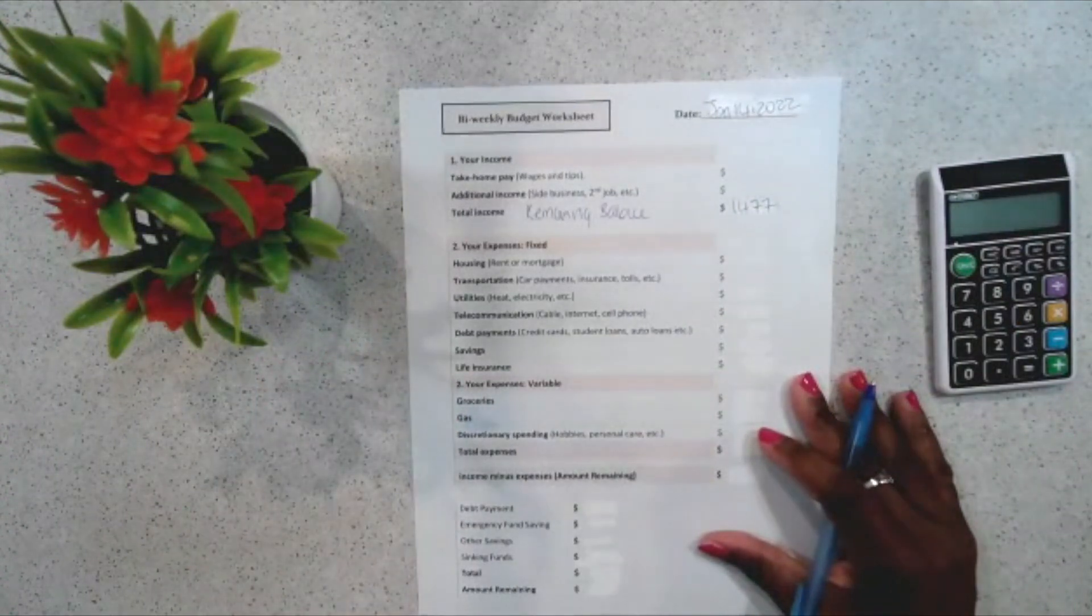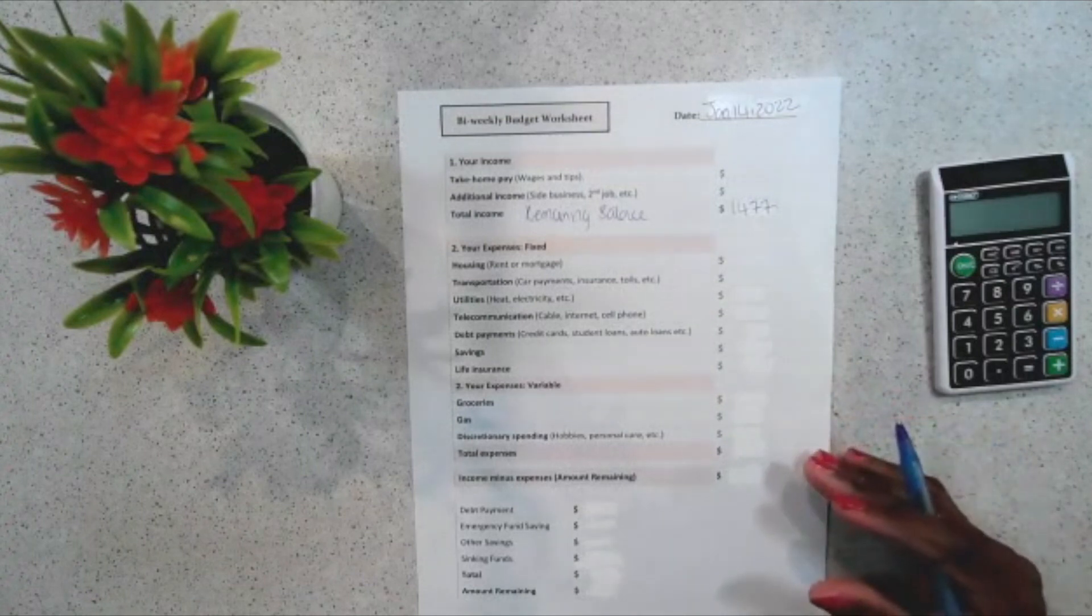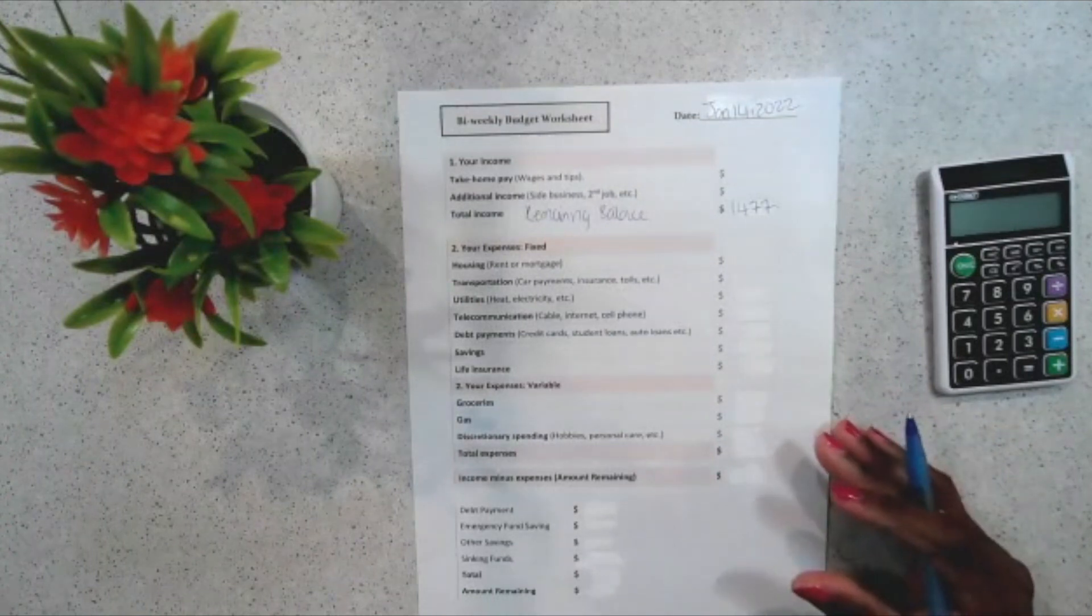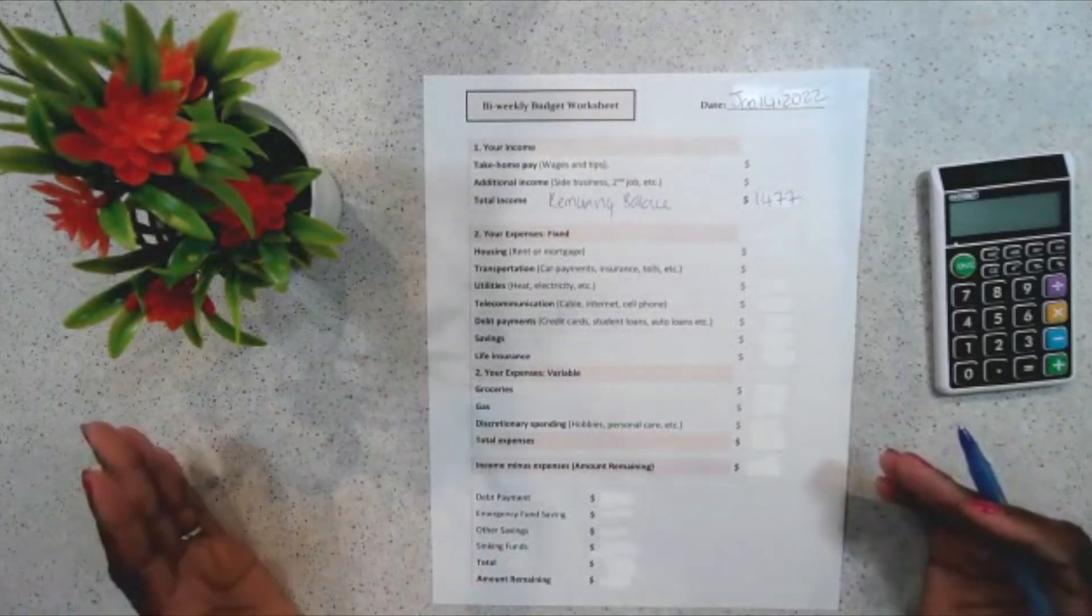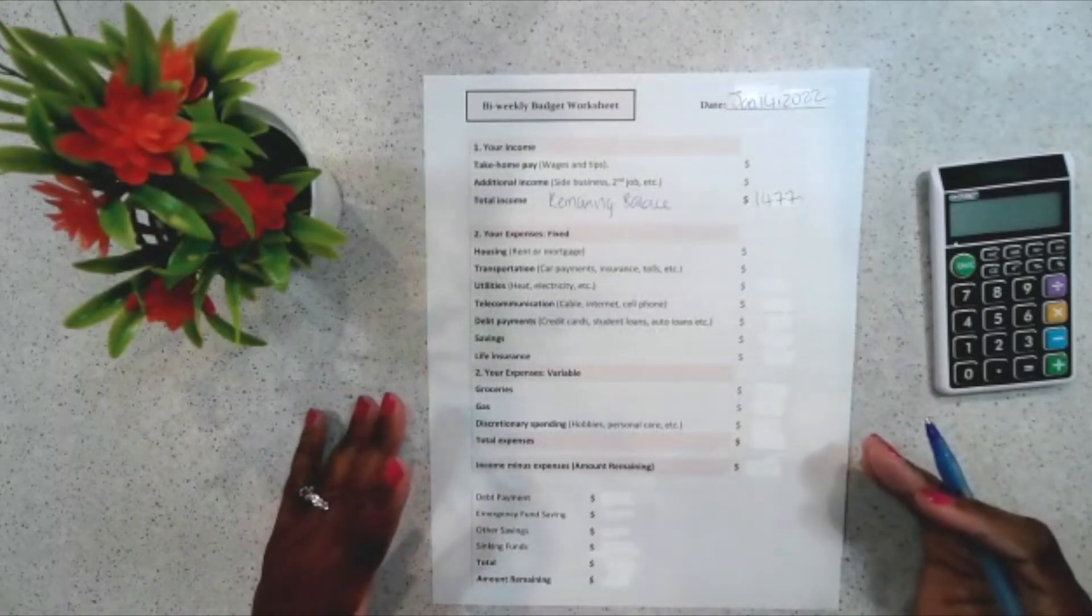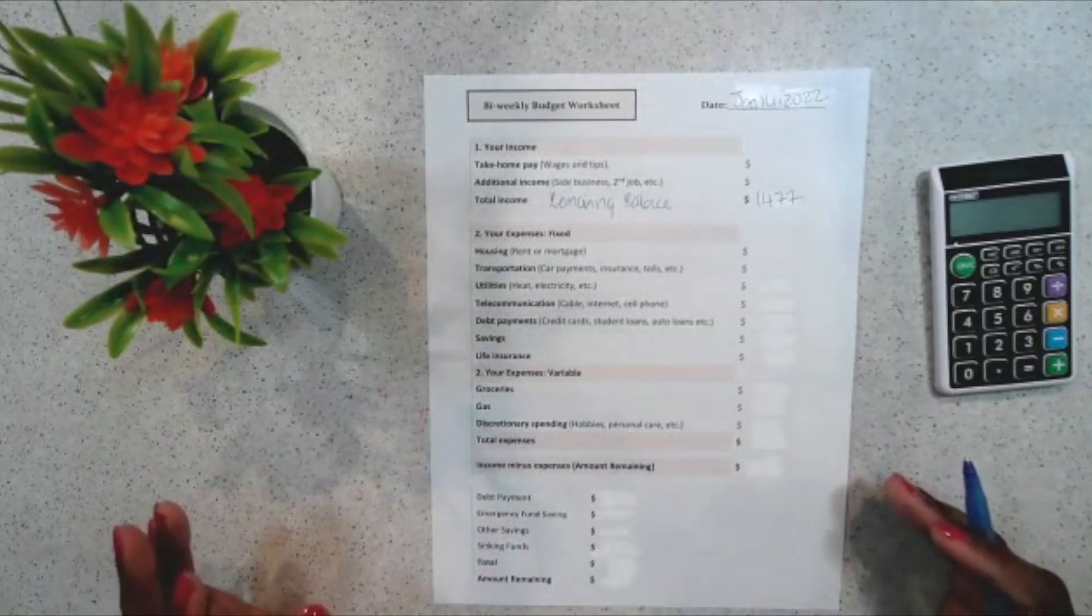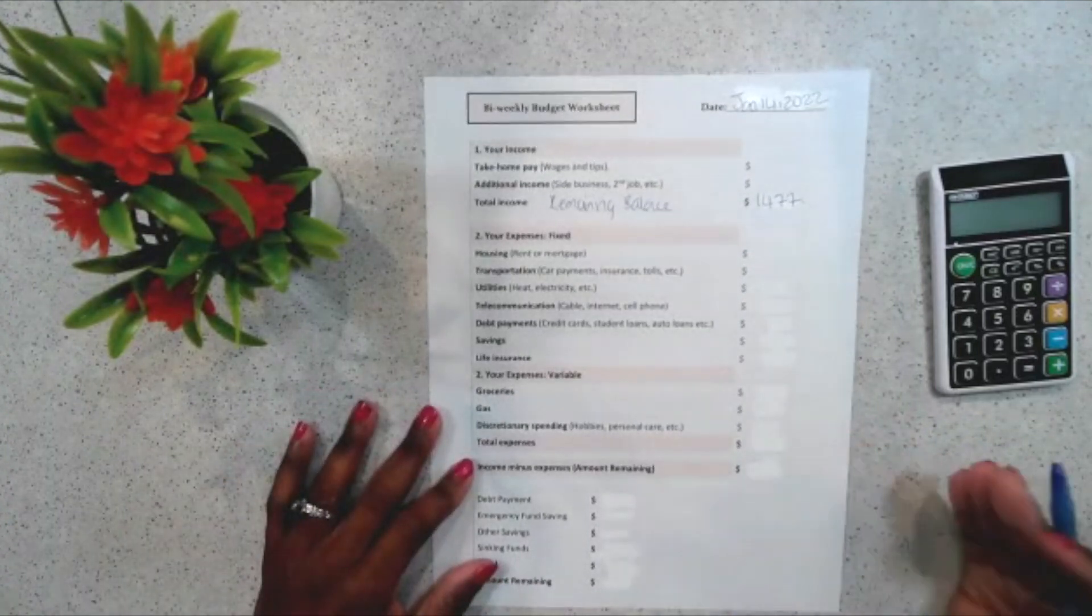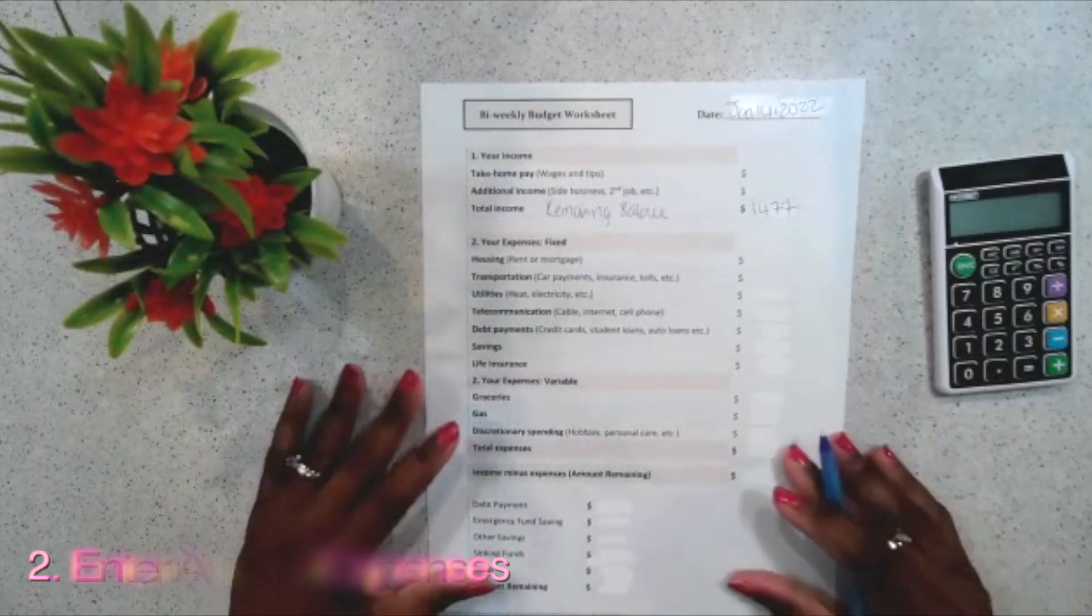I will now go to the expenses. And you can list all your expenses in one group. But for me, I will separate them into fixed and variable. So, fixed expenses are pretty much those that carry the same amount from month to month, while for variable expenses, the amounts differ from month to month. So, right now, I will go ahead and enter the amounts for my expenses.